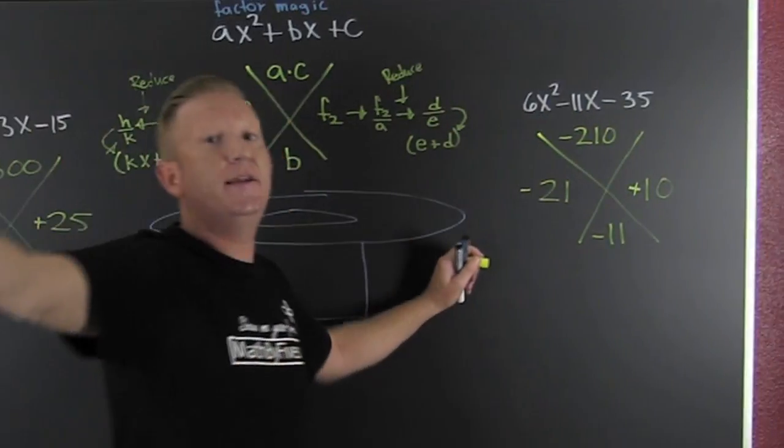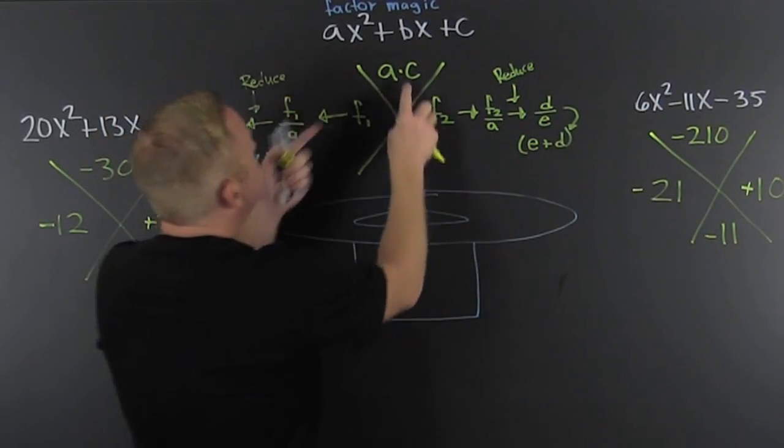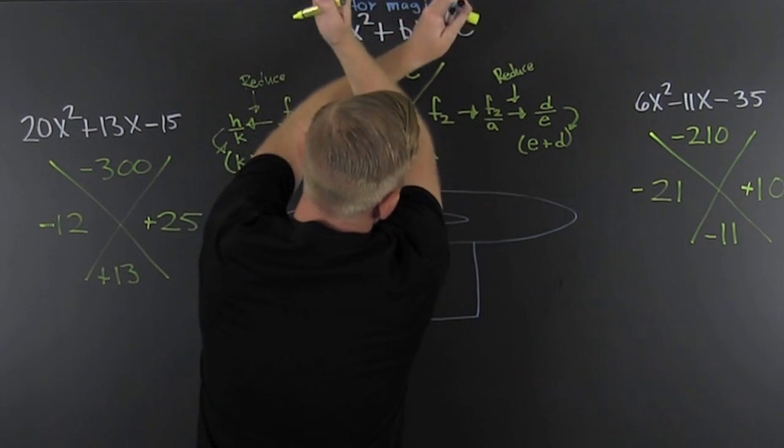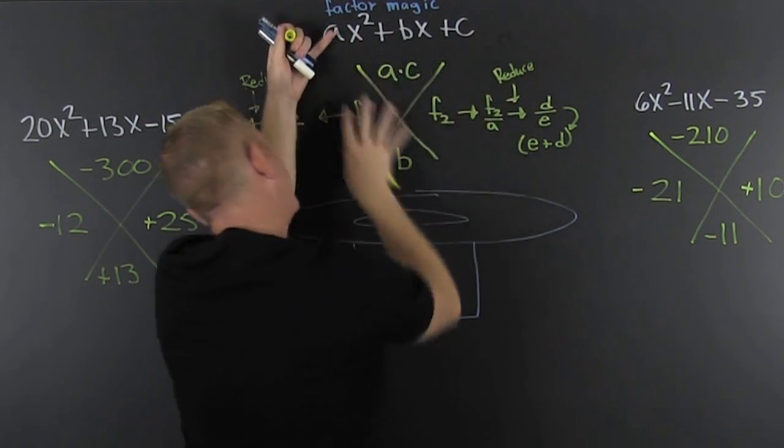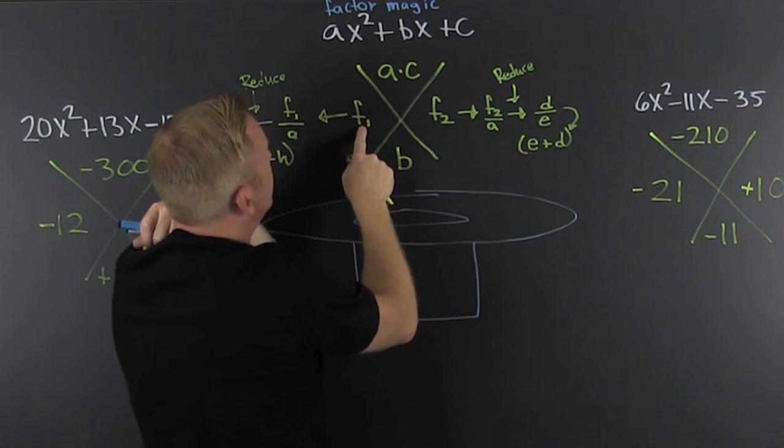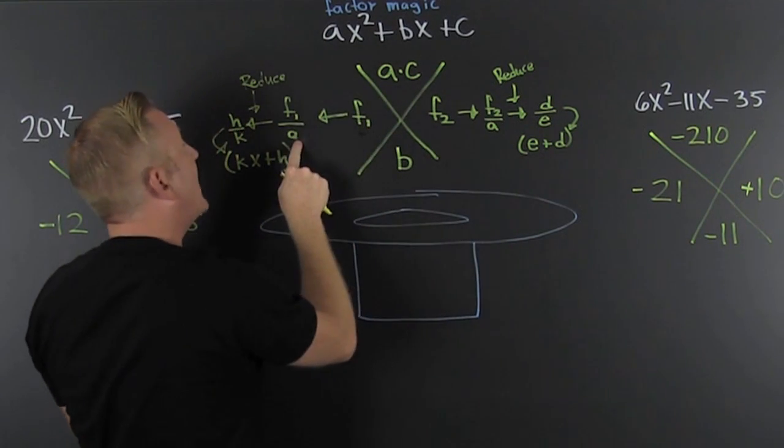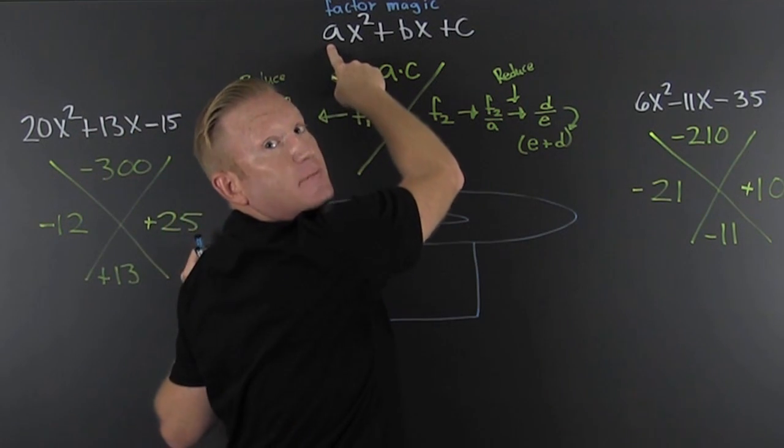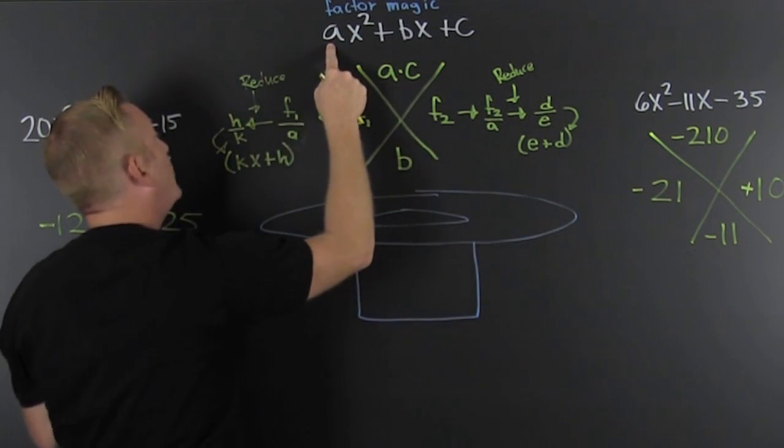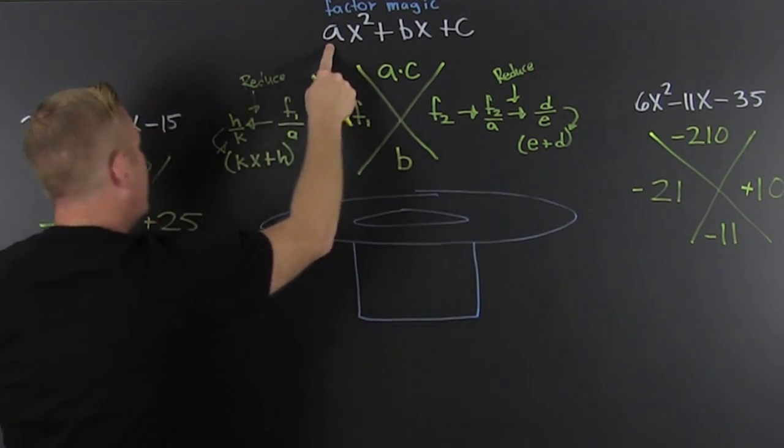I write the next part of the process. Now that we got the extreme factoring all written out, pretend I didn't write it there. I have this guy right here. What am I going to do? I'm going to take the factor, the first one, and I'm going to divide it by a. What's a? It's the leading coefficient. This is factoring by magic.